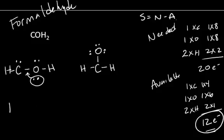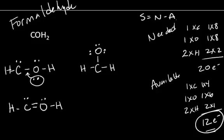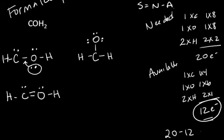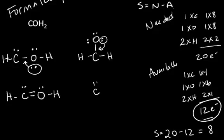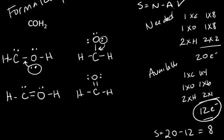So we take a lone pair and make a double bond. We've used all 12 of our electrons and made four bonds. How many bonds should we make? 20 minus 12 is 8, and 8 divided by 2 equals four bonds — so we expect four bonds from the S equals N minus A rule. For the second structure as well, carbon still isn't satisfied, so we move a lone pair to form a double bond. We've used all 12 electrons and have four bonds. Both structures match our S equals N minus A rule and follow all the rules. Which is the better structure?